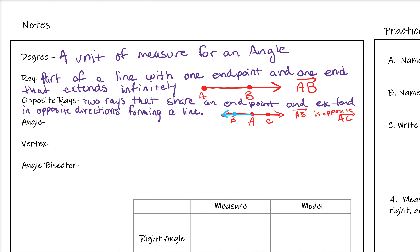An angle is formed by two non-collinear rays that share an endpoint — so it's two rays that are not opposites. It's formed by two rays that share an endpoint and are not collinear.